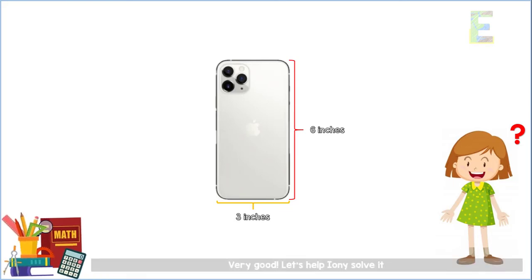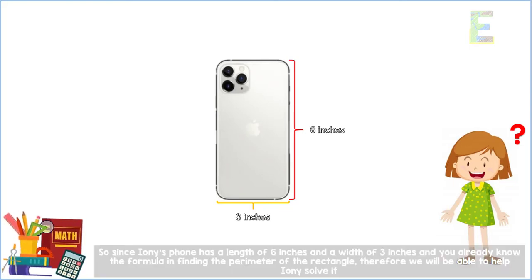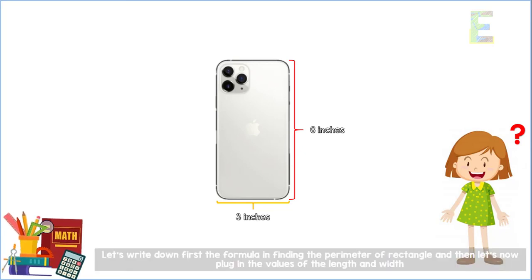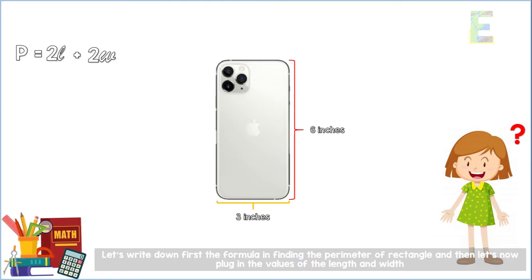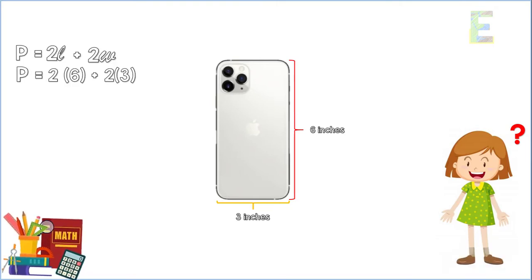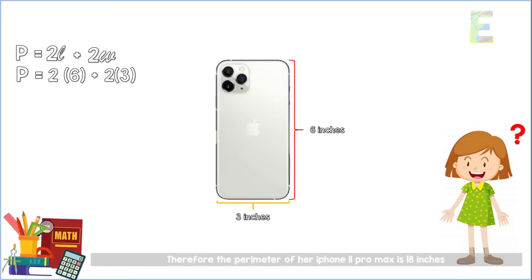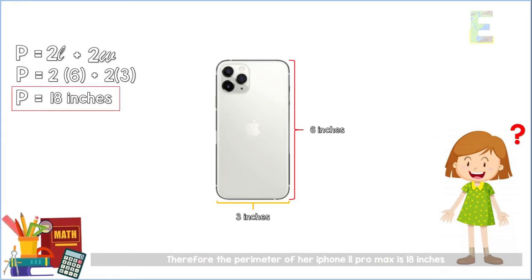Very good, let's help Ayuni solve it. Since Ayuni's phone has a length of 6 inches and a width of 3 inches, and we already know the formula for finding the perimeter of a rectangle, we will be able to help her solve it. Let's write down first the formula P equals 2L plus 2W, and then plug in the values of the length and width. Therefore, the perimeter of her iPhone 11 Pro Max is 18 inches. Good job — you helped Ayuni solve the perimeter of her phone.